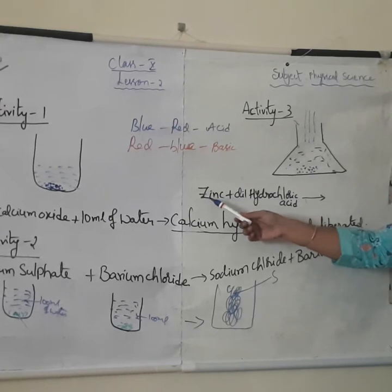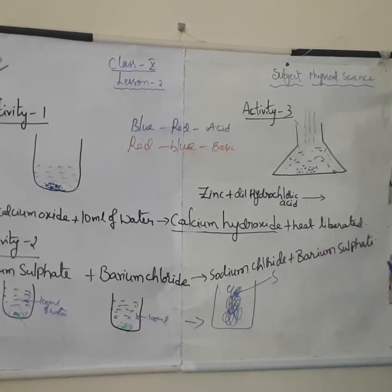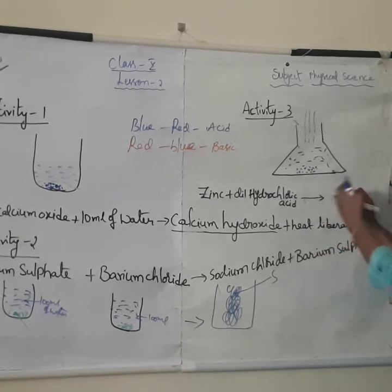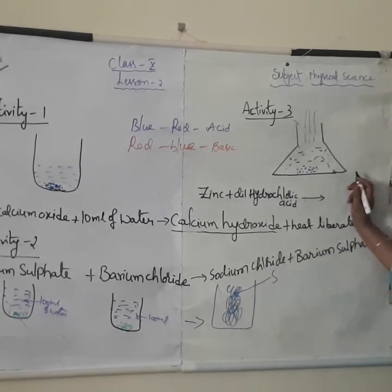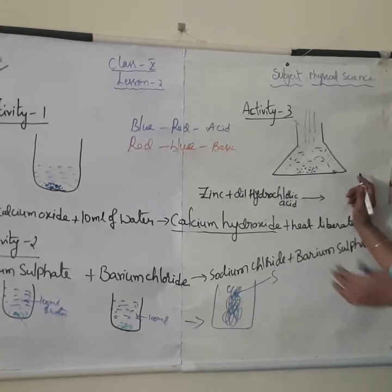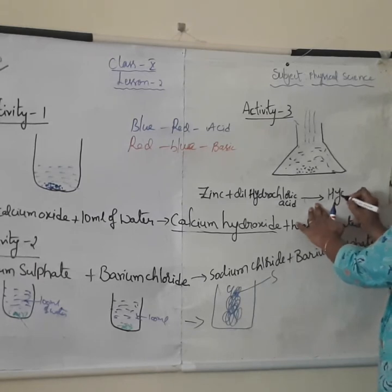When you are taking the zinc granules and they are reacting with the hydrochloric acid, some gases are evolving. The gas that puts off the flame is hydrogen. Oxygen gas always helps to burn; so here, to put off the flame, it is hydrogen gas. So hydrogen gas is involved in this reaction.